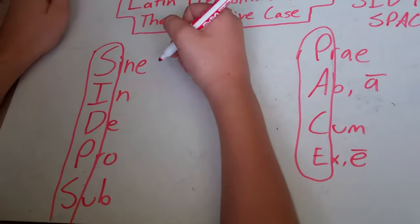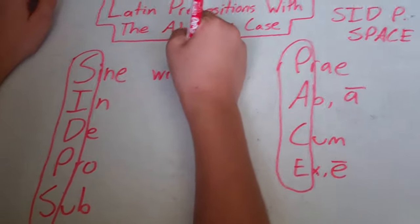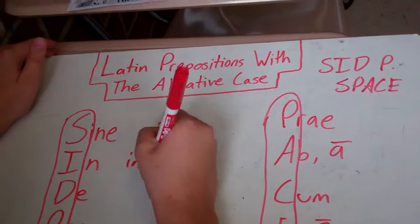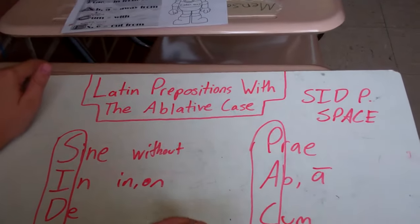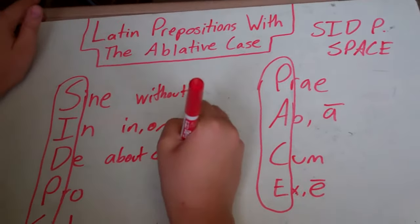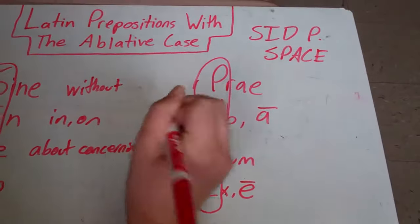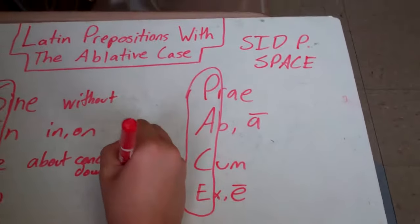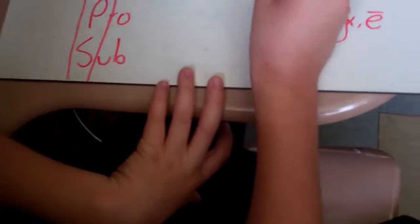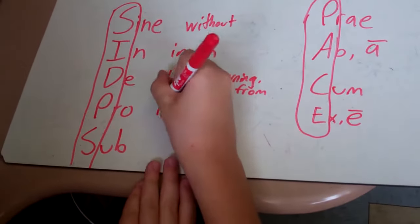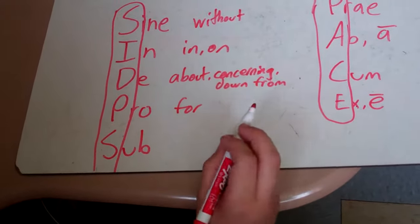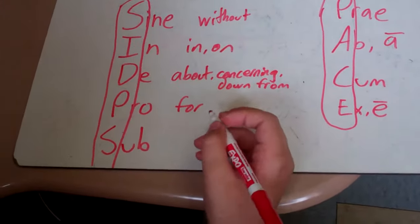Sine can be translated as without. In can be translated as just in or on. De can be either about, concerning, or down from. Pro is for, and a way to remember that is like protagonist, the good character for good, going for something.